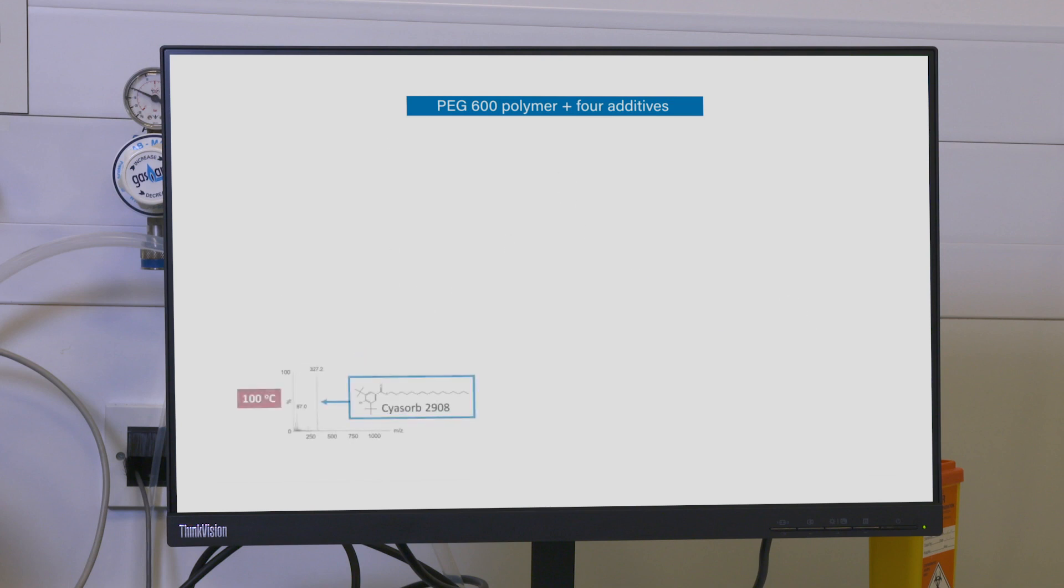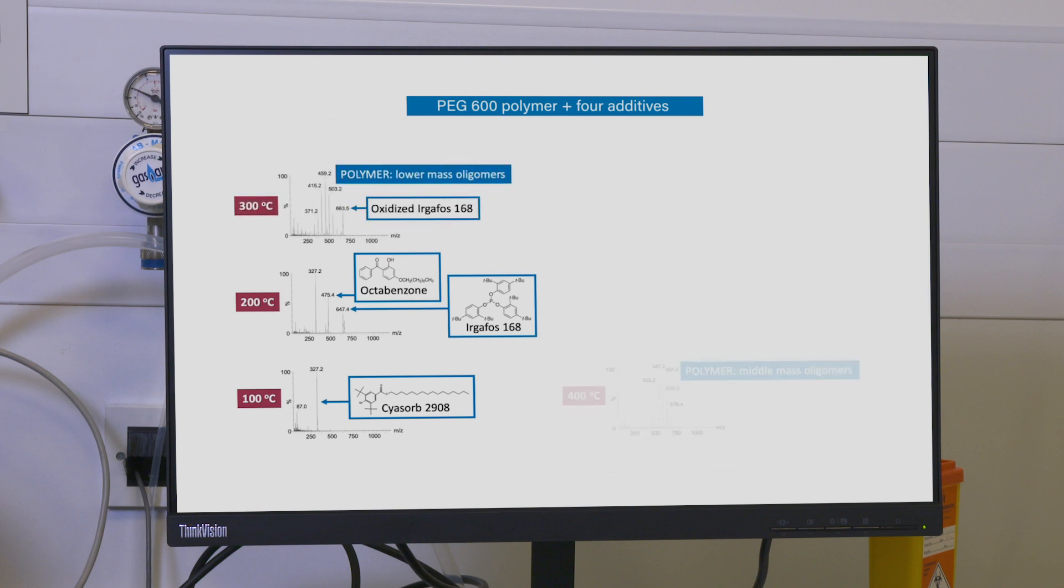In this example, the important polymer additives are detected at lower temperatures, and the polymer itself appears at higher temperatures.